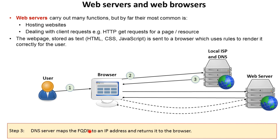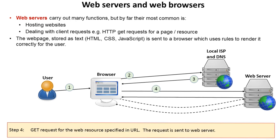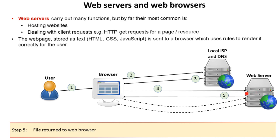It's the DNS server's responsibility to map the fully qualified domain name to a matching IP address and return it to the browser. The ISP identifies which computer is holding that web page and returns the IP to the client. The browser then issues a GET request for the web resource and can send the request directly to that specific server using the returned IP. The file is then returned to the web browser.